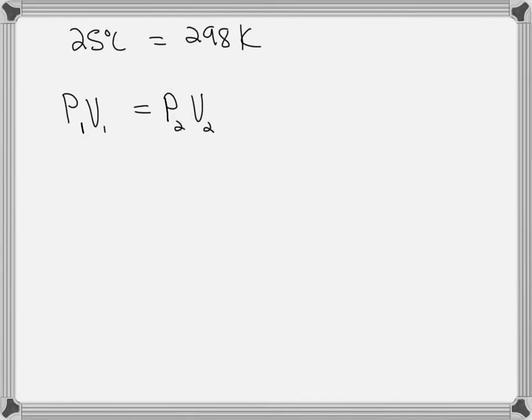To solve for the new pressure P2, that'll simply be equal to the initial pressure times initial volume divided by final volume.